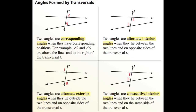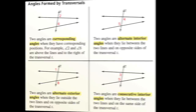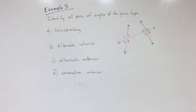The next four vocabulary words you need to know — make sure you draw them and write this down. Corresponding angles are angles that have the same position relative to the transversal. Alternate interior angles are two angles that are in between the two lines. Then you have alternate exterior angles. And finally, what's called consecutive interior angles.